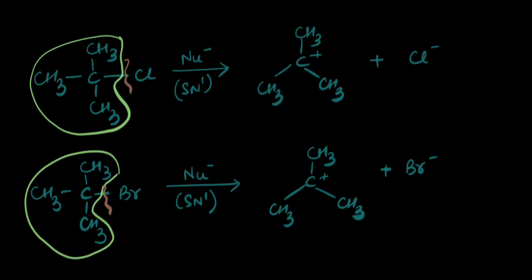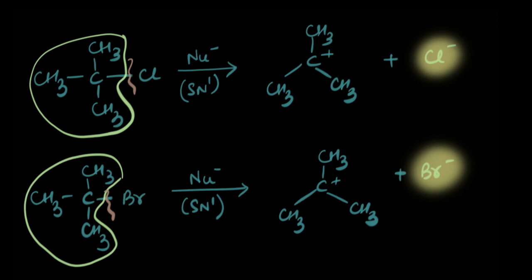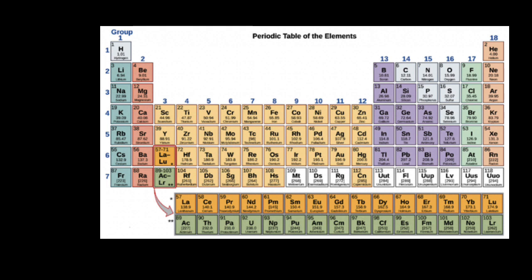And the leaving group is Cl- in the first case while it is Br- in the second case. Since the carbocation formed is the same in each case, we need to focus on what's different. It's the leaving groups. So let's bring all our focus on comparing the stabilities of Cl- and Br-. In the periodic table, both chlorine and bromine belong to the same group while the chlorine atom resides in the third period while the bromine atom resides in the fourth period. Bromine is larger in size than the chlorine atom.